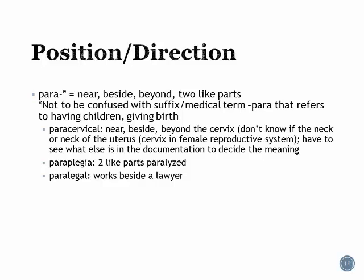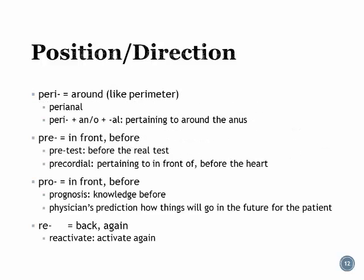Peri means 'around,' as in perimeter. Perianal literally means pertaining to around the anus. Pre means 'in front' or 'before' — you take a pre-test before the real test. Precordial means pertaining to before or in front of the heart. Pro also means 'in front' or 'before,' so prognosis literally means knowledge before — it is the physician's prediction of how things will go in the future.